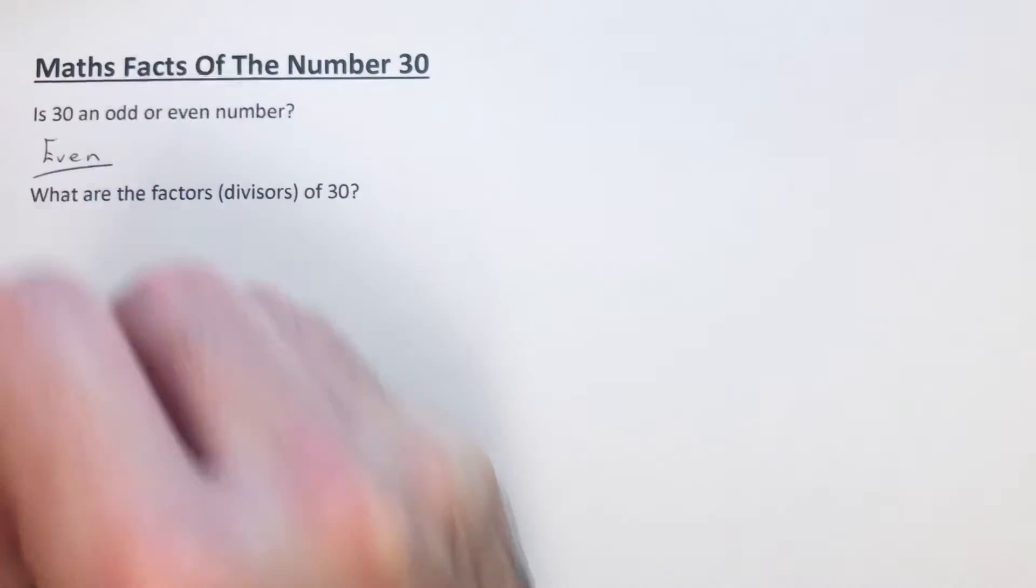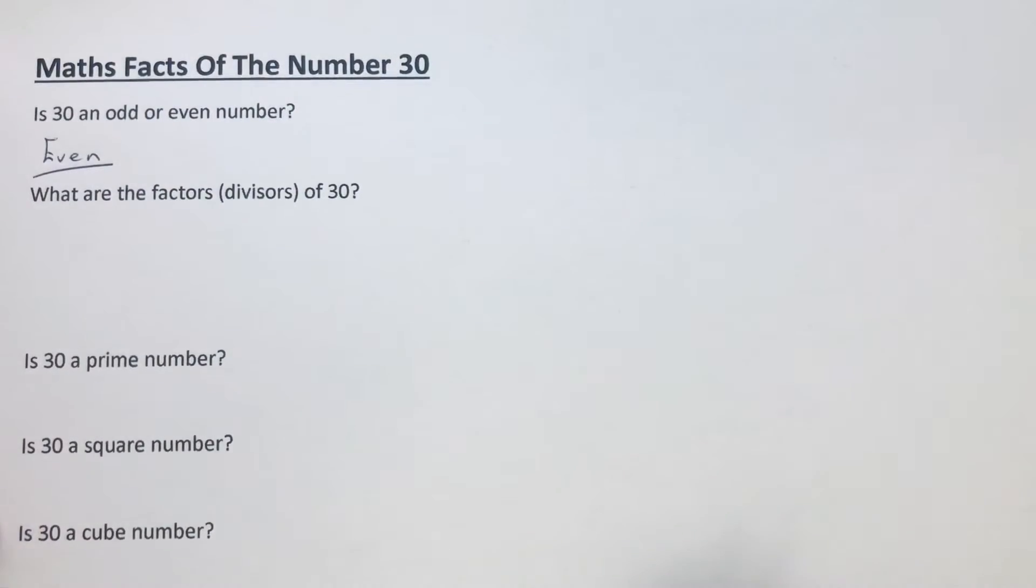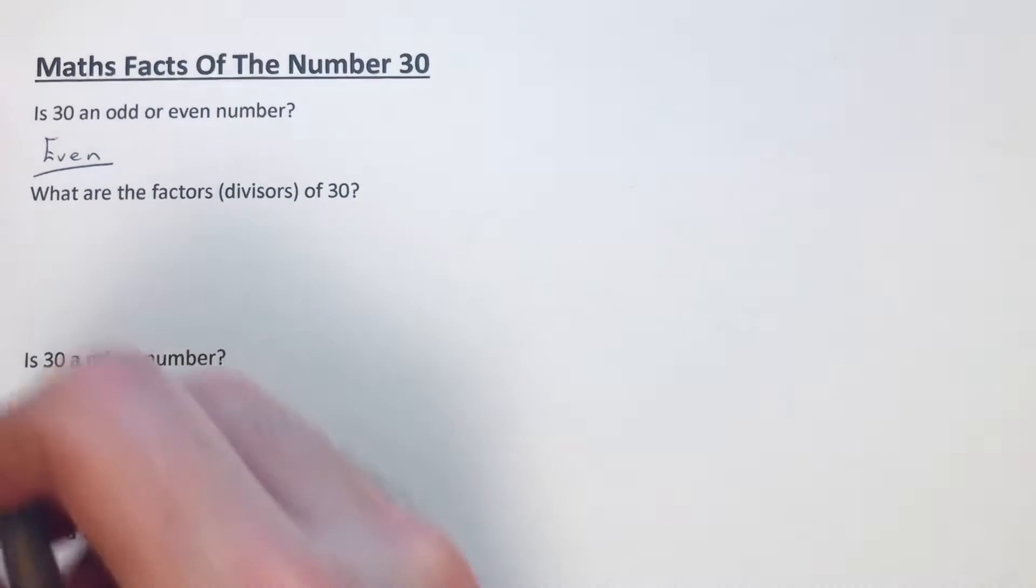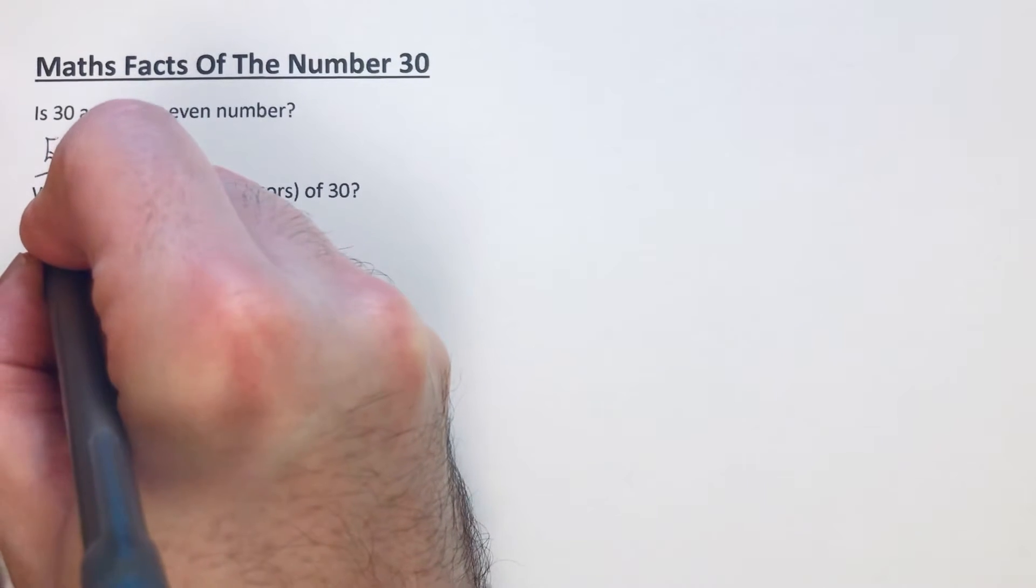So what are the factors of 30? The factors are the numbers which divide exactly into 30. Let's start off with our 1 times table. 1 goes into 30 30 times.